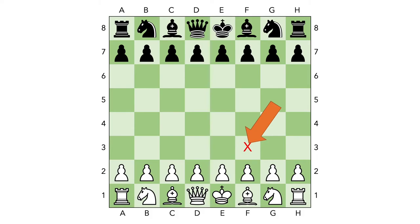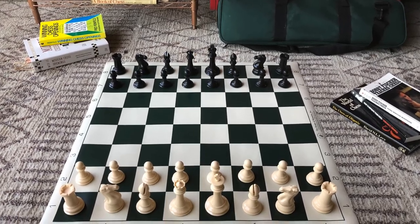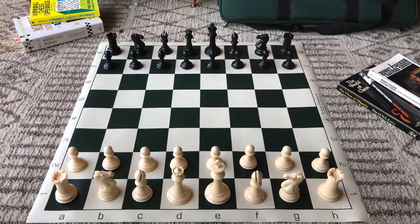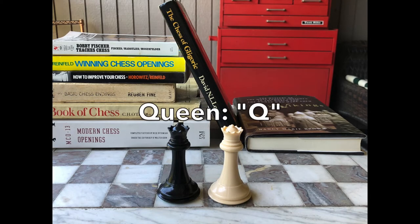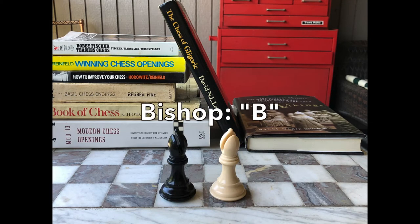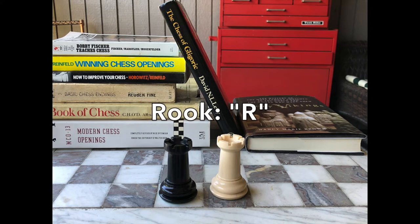From this, every square can be identified the same way that you would identify a cell in a spreadsheet. F3 is this square. B6 is this square, and so on. In chess notation, every piece is represented by a letter: Kings are K, Queens are Q, Bishops are B, Knights are N, and Rooks are R.